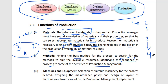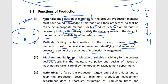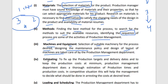The third function is machine and equipment. We need to select suitable machinery for the process, design the maintenance policy, and plan the layout of machines on the production floor. There may be two or three companies making the required type of machine, so we select the appropriate one. All of this is taken care of by the production management department.